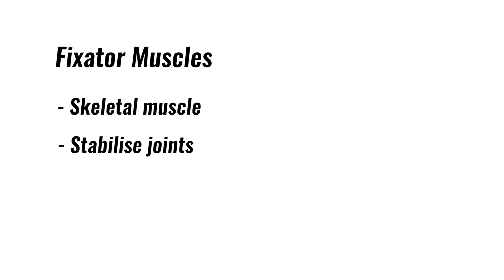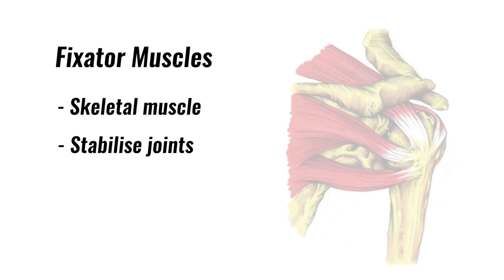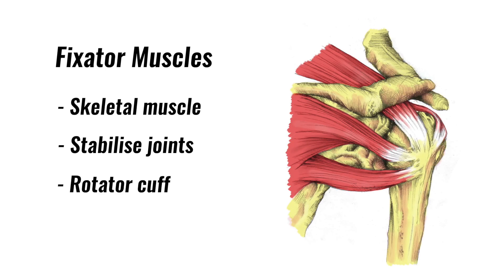Fixator muscles are a type of skeletal muscle whose primary purpose is to stabilize joints. For example, the rotator cuff muscles help stabilize the shoulder.